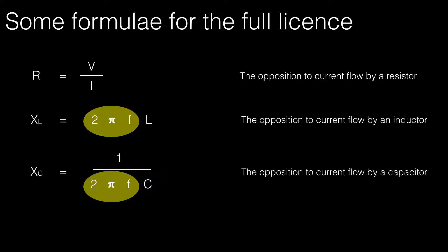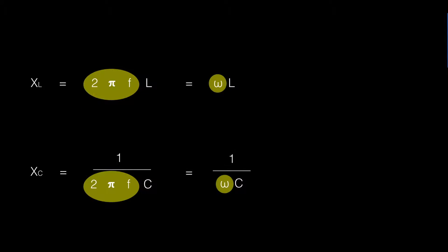You can simply look at the equations in the exam and apply them by typing 2 times pi times f in your calculator, or we can have a look at this term in more detail. We can rewrite these formulas: XL equals 2 pi f L can become XL equals omega L, and XC equals 1 over omega C.